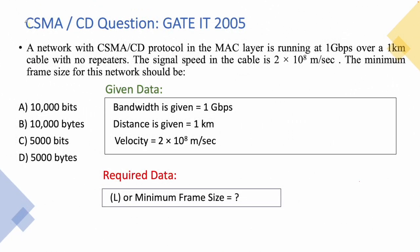In this video on computer networks we will see a question on CSMA/CD. The question states that there is a CSMA/CD protocol with a bandwidth of 1 Gbps, a distance of 1 km, and a signal speed of 2×10⁸ meters per second. We have to find the minimum frame size given this data.